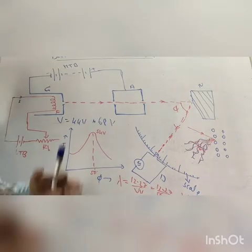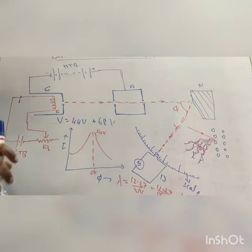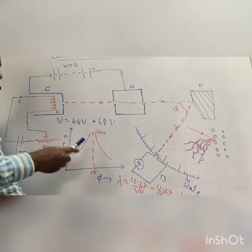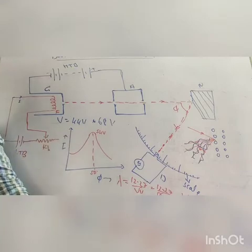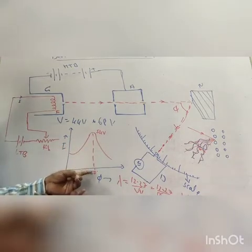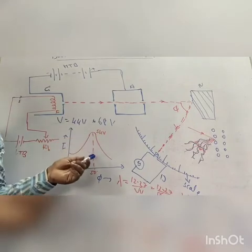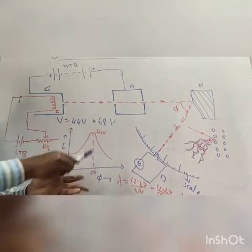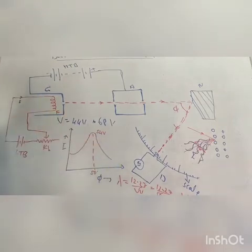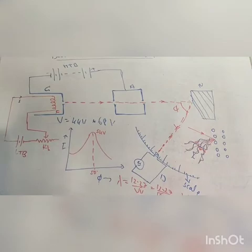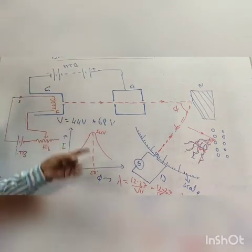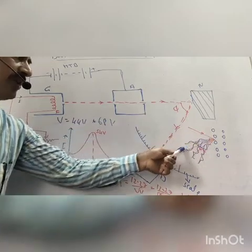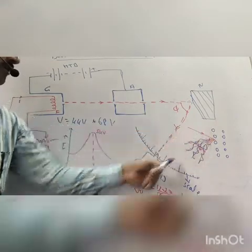This is diffraction, showing a principal maximum. Principal maximum occurs due to constructive interference, giving maximum intensity in the diffraction band. At 50 degrees angle, constructive interference occurs, while at other angles destructive interference produces dark bands. Bright bands indicate the electron beam exhibits wave nature.